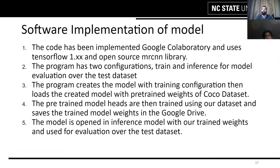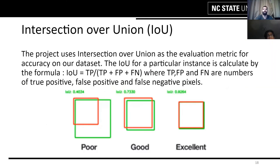Talking about the software implementation, the code has been implemented in Google Colaboratory using TensorFlow 1.x and an open-source MRCNN library. The program has two configurations: train and inference. The train configuration generates the model, and the inference configuration is used for evaluation over the test dataset. The program creates the model with training configuration, loads the weights of the pre-trained COCO dataset, then trains the model heads using our dataset and saves them to Google Drive. The model is reopened in inference mode and evaluated over the test dataset using Intersection over Union as the evaluation metric.